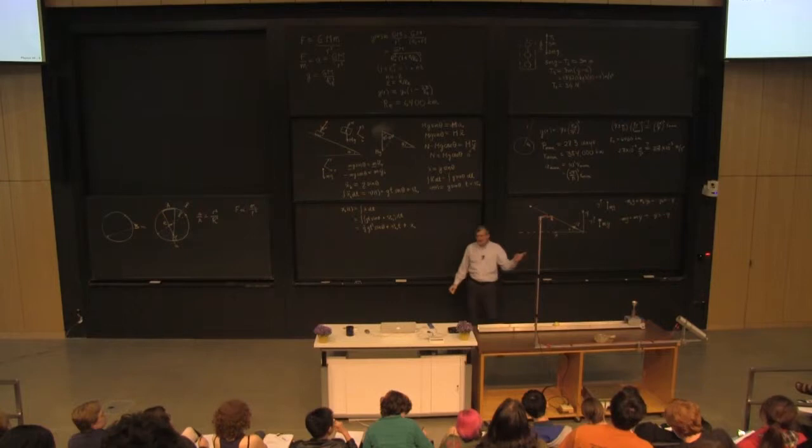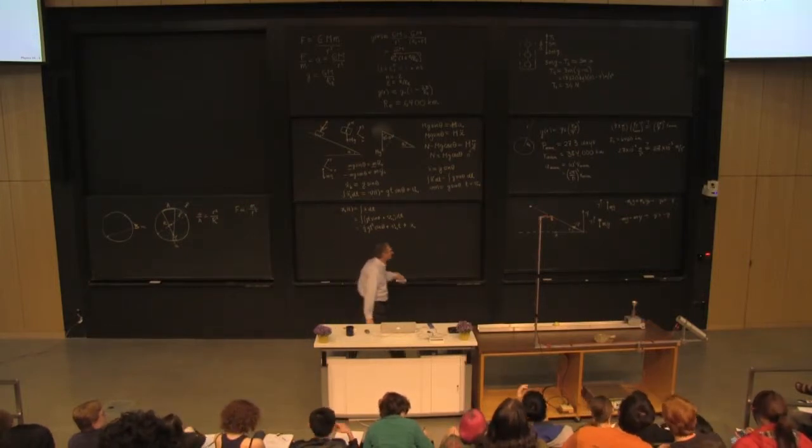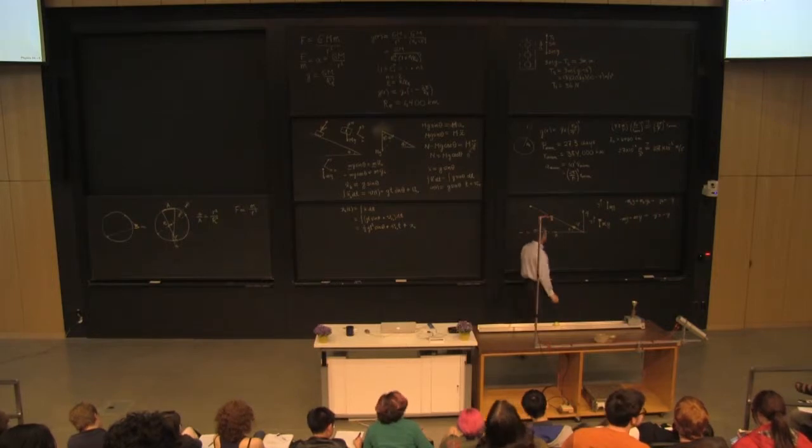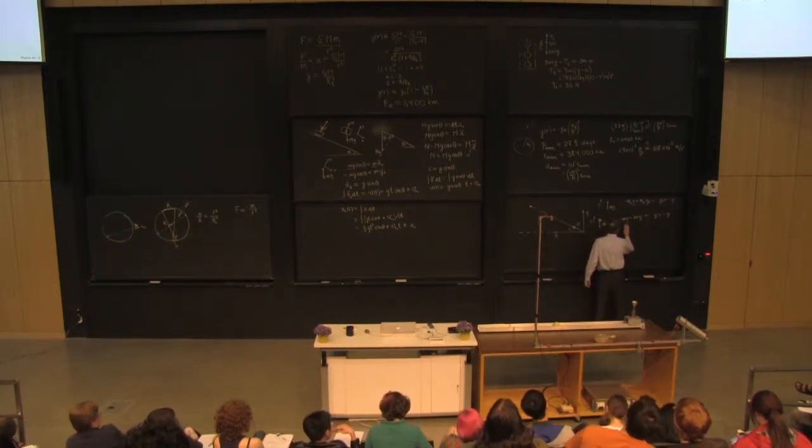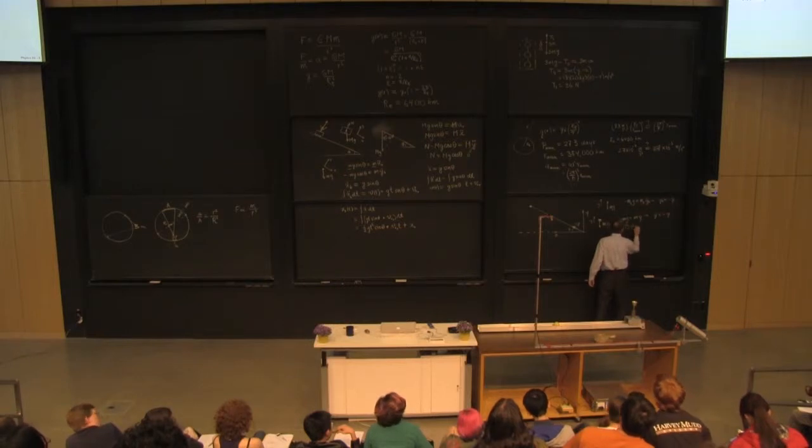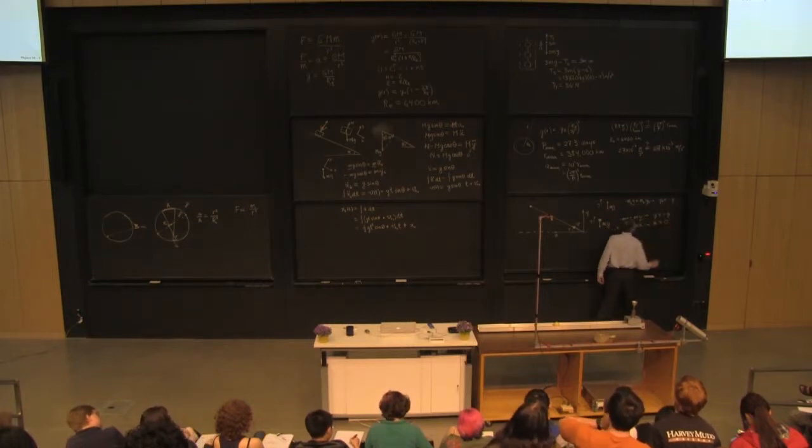But in this case, I also have a launch velocity in the x direction. So I might want to project in the x direction, in which case I get the sum of the forces in the x direction is 0 is equal to m x double dot. So x double dot is 0.